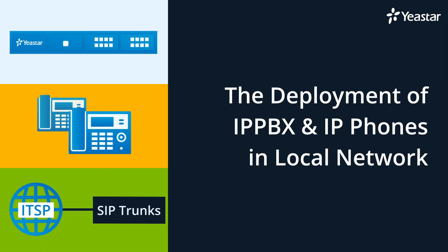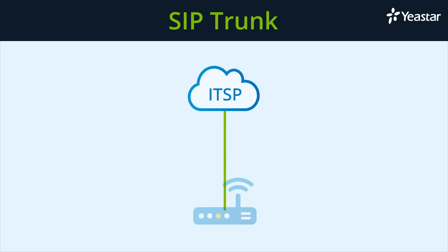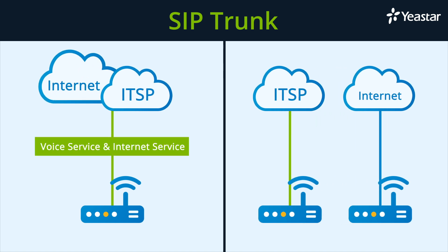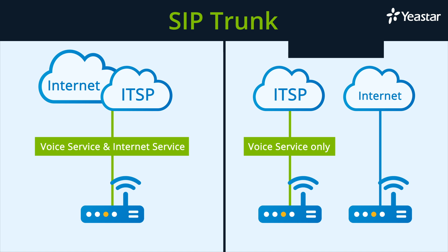It's time for SIP trunk configuration. Here's the ethernet cable of the SIP trunk provided by the service provider. Generally speaking, there are two types of SIP trunk. One provides the voice service as well as the internet service, while the other one provides the voice service only — also known as a SIP dedicated trunk. The way we deploy these two types of SIP trunk is different.